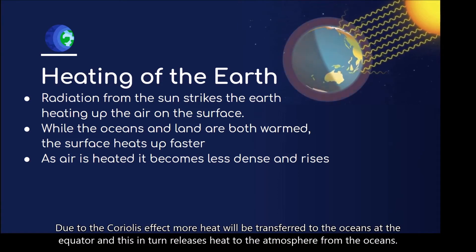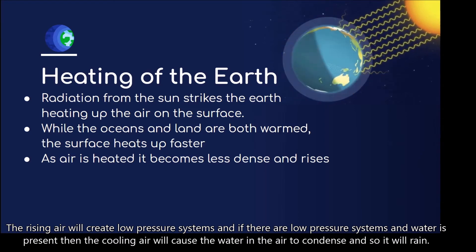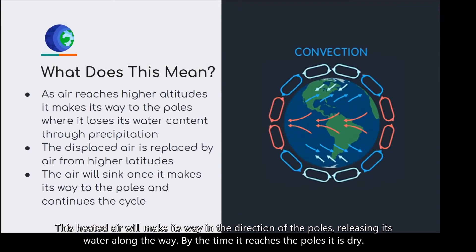Due to the Coriolis effect, more heat will be transferred to the oceans at the equator, and this in turn releases heat to the atmosphere from the oceans. The rising air will create low-pressure systems, and if there are low-pressure systems and water is present, then the cooling air will cause the water in the air to condense, and so it will rain. This heated air will also make its way in the direction of the poles, releasing its water along the way. By the time it reaches the poles, it is dry.